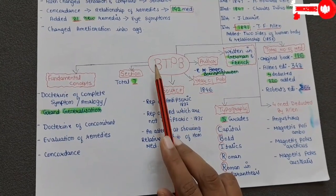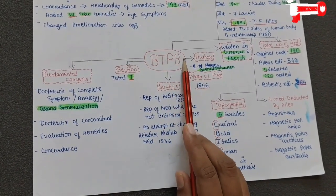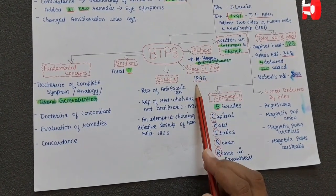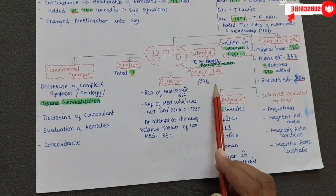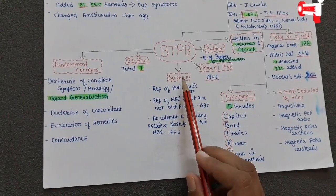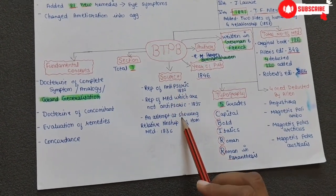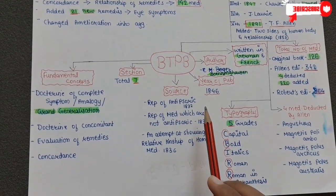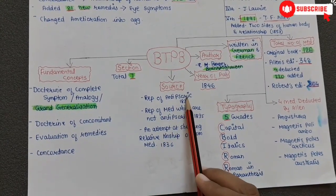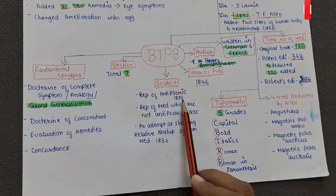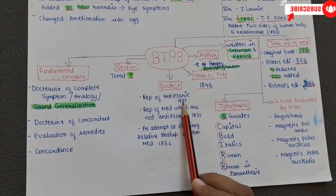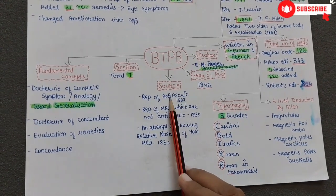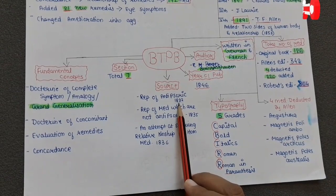Coming back to the mind map: Boninghausen's Therapeutic Pocket Book — the author is Dr. Boninghausen and it was published in the year 1846. The sources are three important repertories authored by Dr. Boninghausen himself. The Repertory of Antipsoric Remedies was published in 1832 — this is important; MCQs are asked on the year of publication and also on who wrote the preface of the Antipsoric Repertory.